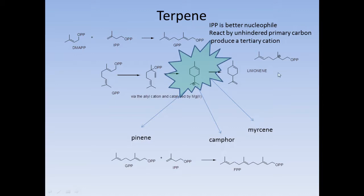From this key carbocation, a number of molecules can be synthesized: pinene, camphor, myrcene, and geraniol. In the next tutorials, a detailed version of this carbocation rearrangement will be discussed. This carbocation is the most important intermediate for monoterpene synthesis — yielding pinene, camphor, myrcene, and geraniol. I will discuss the detailed carbocation rearrangements for a number of monoterpenes in coming tutorials.